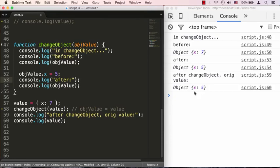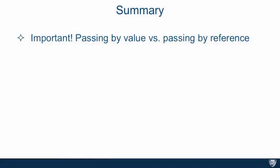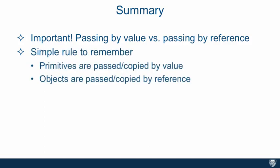So this is how passing by value and passing by reference works in code. To summarize: it's very important to understand passing by value versus passing by reference — you really can't code without understanding this basic concept. The simple rule to remember is: primitives are passed or copied by value, and objects are passed or copied by reference. Copying or passing by value means the new variable has no relation to the old variable and changing it will not affect the old one. As opposed to passing or copying by reference, where changing the new variable will affect the values of the old variable from which the object was copied.